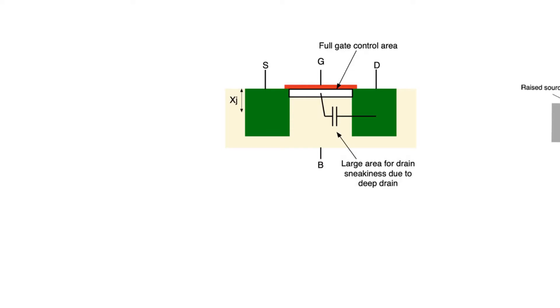So we understood drain-induced barrier lowering as an effect that happens because the gate is losing control over the channel and the drain is gaining some control over the channel. That happens basically because the drain is now large, deep, and close to the midpoint of the channel.